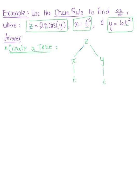Each one of these little branches represents the partial derivative relating those two variables. This first branch is the derivative of the function with respect to x, and then this branch is the derivative of x with respect to t. Taking the product of those two partial derivatives, I have the partial derivative of the function with respect to x, times the derivative of x with respect to t.